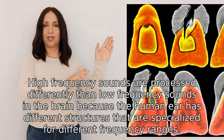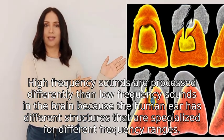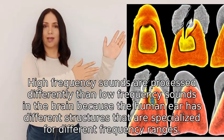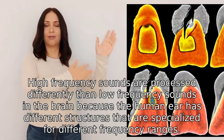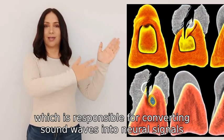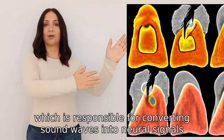High frequency sounds are processed differently than low frequency sounds in the brain because the human ear has different structures that are specialized for different frequency ranges. The cochlea, which is responsible for converting sound waves into neural signals, is